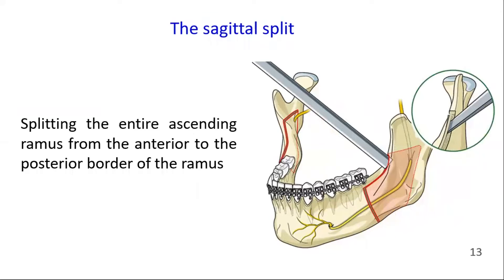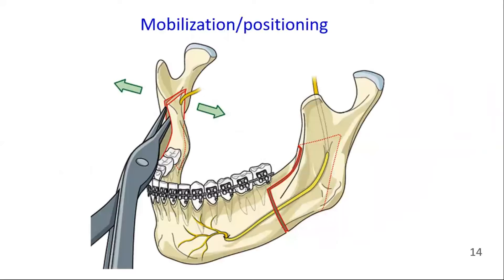The final split — that is, the sagittal split — is completed with a thin osteotome splitting the entire ascending ramus from inferior to the posterior border of the ramus, just behind the entrance of the inferior alveolar canal or lingula. A special bone spreader can be used to mobilize the segments.